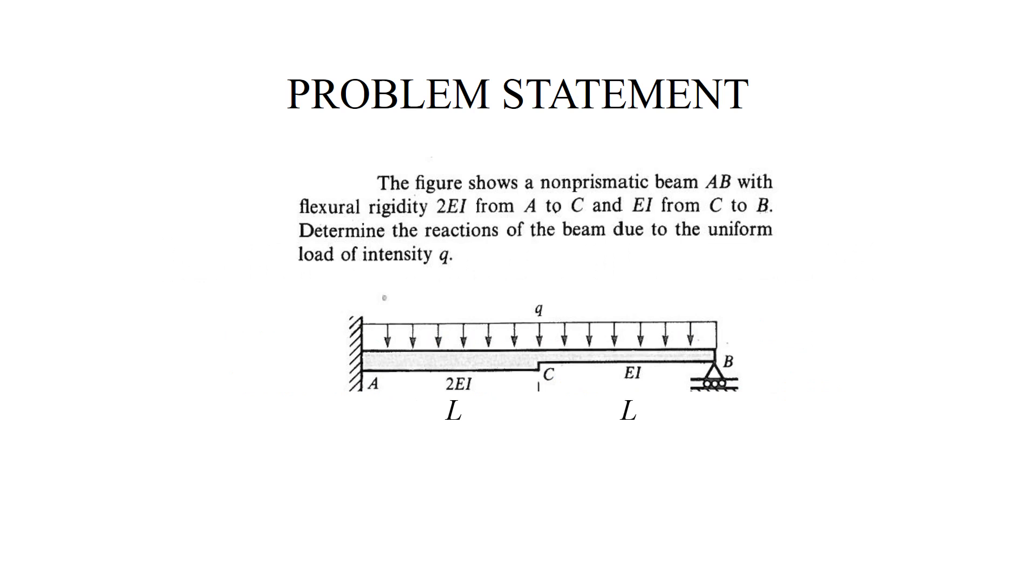The beam is statically indeterminate because it is constrained by a wall on the left and a roller on the right. If we draw its free-body diagram, we have more unknowns than equilibrium equations. The beam has two segments. The one on the left has the bending stiffness 2EI and the one on the right bending stiffness EI.